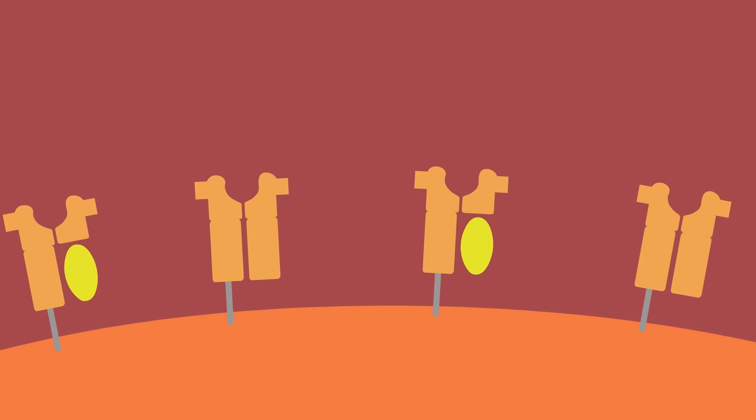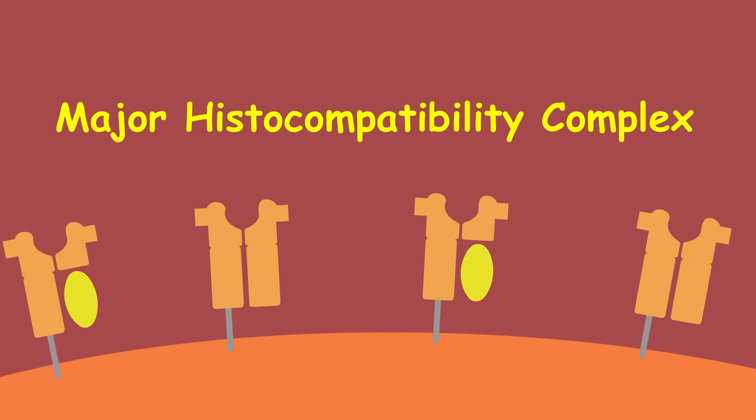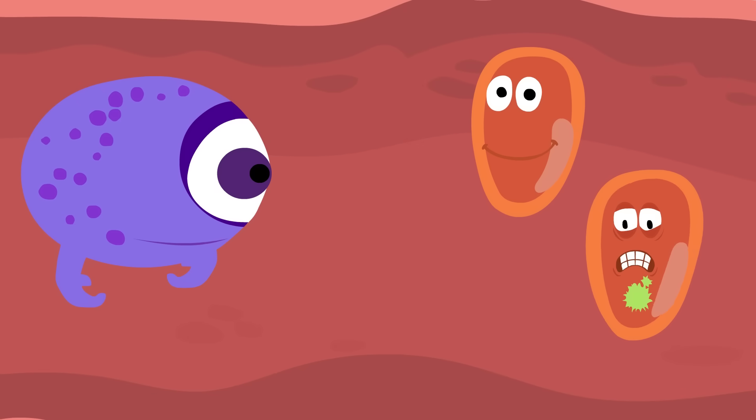Natural killer cells detect a protein produced by normal cells called the major histocompatibility complex, or MHC. Basically, whenever a cell isn't normal, it stops producing this protein.